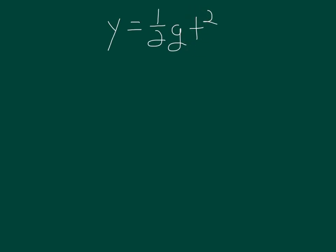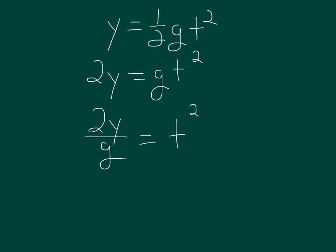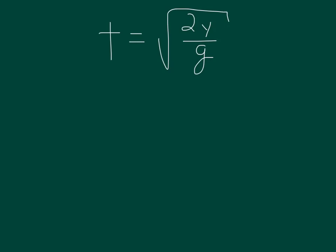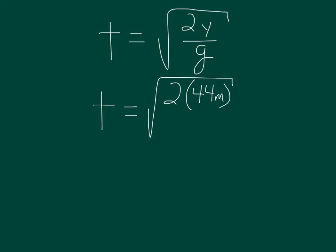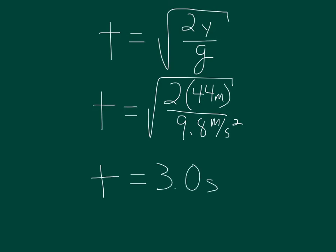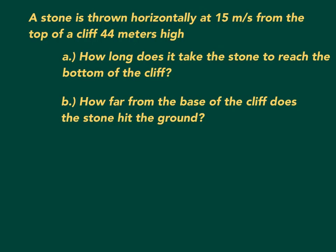To solve for t, I multiply both sides by 2 to eliminate the one-half: 2y = g × t². Then I divide both sides by g to isolate t², and take the square root of both sides to get t. Plugging in the numbers: t = √(2 × 44 m ÷ 9.8 m/s²) = 3 seconds. That's the answer to Part A — the stone takes 3 seconds to reach the bottom of the cliff.